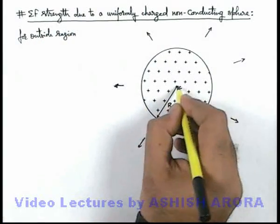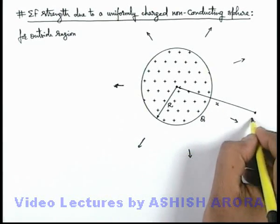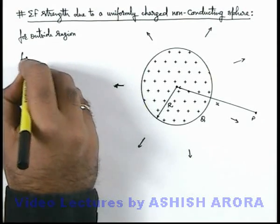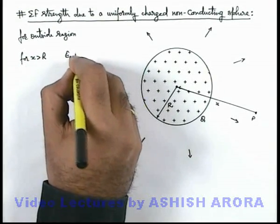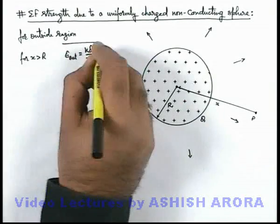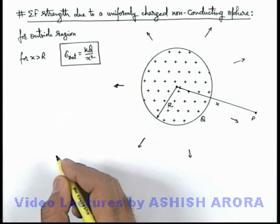We calculate the electric field strength at a distance x, at a point P from the center. For x greater than R, the electric field in the outside region can be directly written as E_out = kQ/x². This is the similar result which we have used for a hollow or conducting sphere.